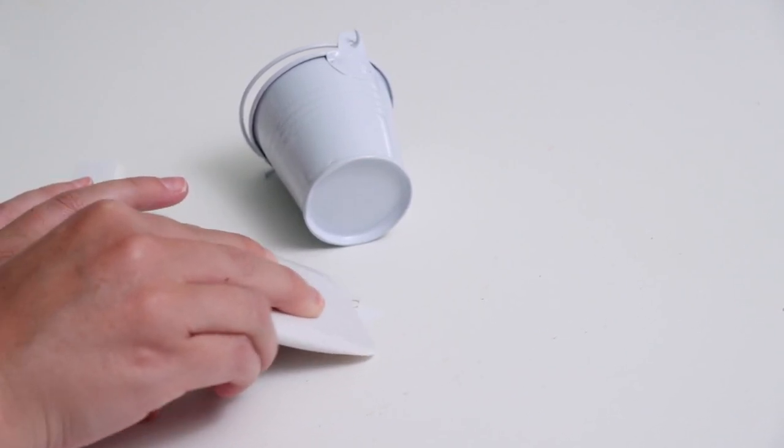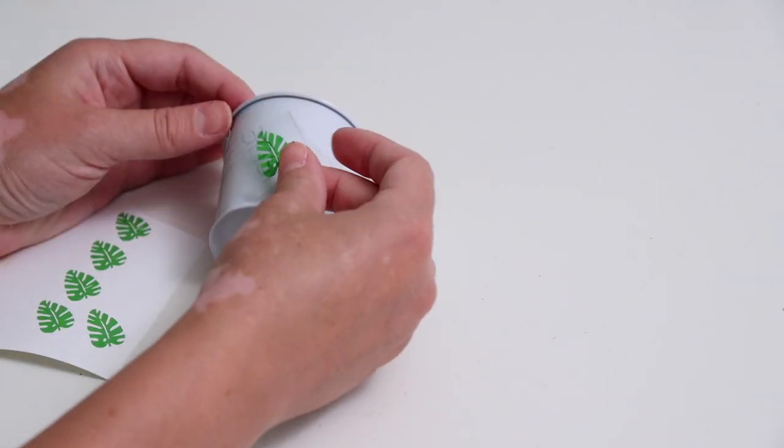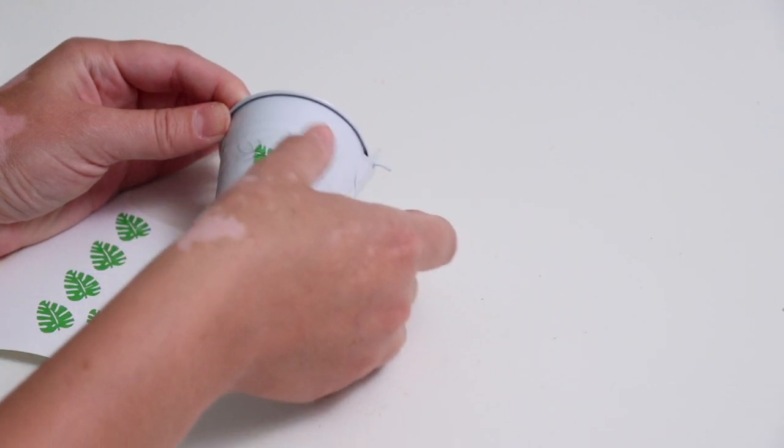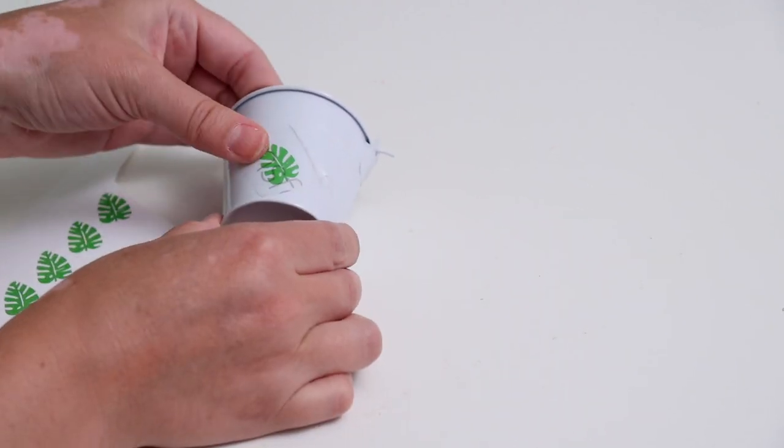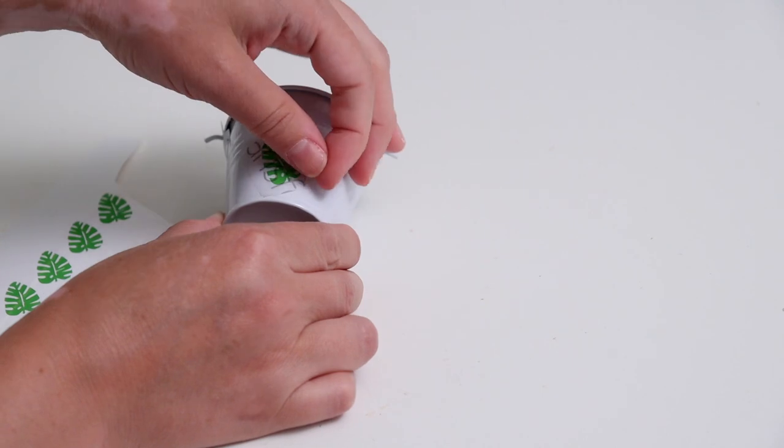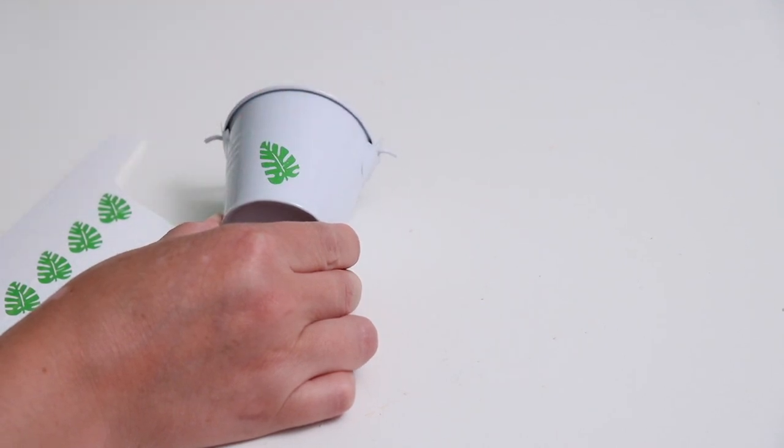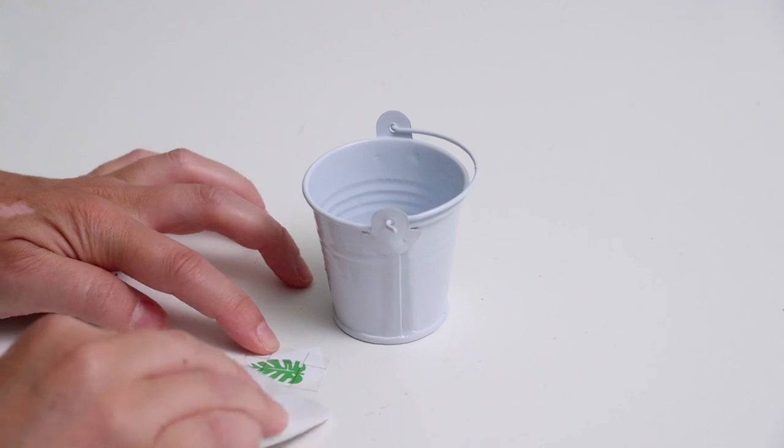So I cut each one out individually, then cut a small piece of transfer tape and added it to the top of my design, and then I just smoothed it out using my scraper tool. Then I went ahead and peeled off the backing of the transfer tape and added this right onto the little bucket here.